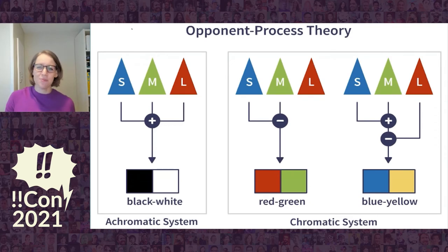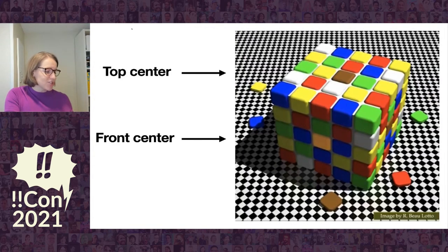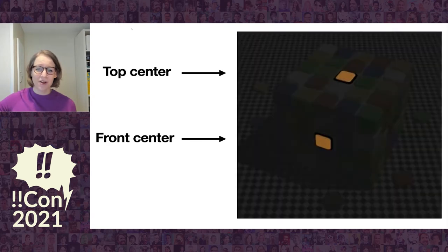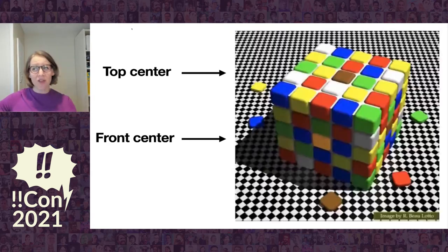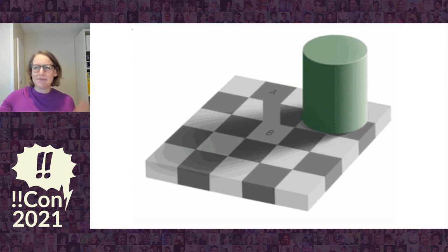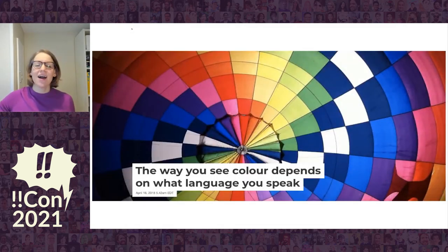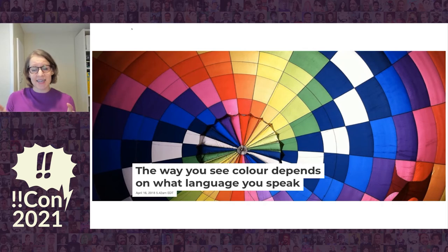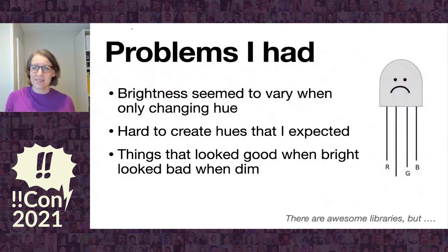This is why you can see reddish blue, but you can't see reddish green. It turns out that a lot of color is really dependent on context. Here, the top center square and the front center square are actually the same color, but our eyes are really good at trying to figure out what the lighting conditions are and making assumptions based on that. Here's another: A and B are actually the same color, and even when we connect them, it's hard to believe — I almost see it as a gradient. Color can also depend on the language you speak. Some cultures have more names for what we might call light blue or dark blue, and folks will actually see those as distinct colors or associate different meanings with them.